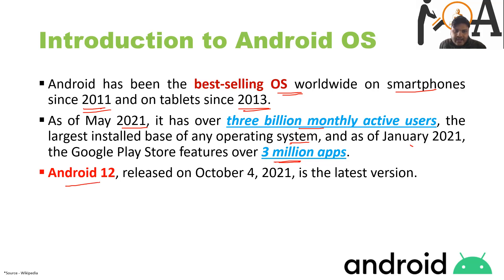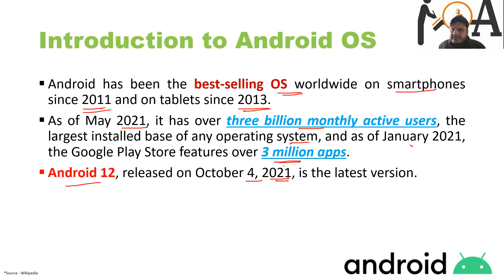Android 12, released on October 4, 2021, is the latest version of the Android operating system. In this lecture, we have discussed the introduction to Android OS — who developed it, what is the AOSP source code concept, and some key informational points.